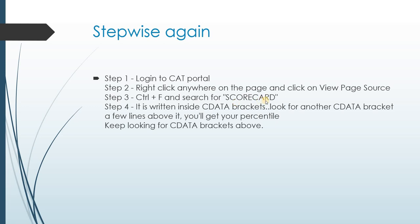Step four: the score information is written inside CDATA brackets. Your sectional percentiles will be there. Look for another CDATA bracket a few lines above and you'll get your overall percentile. I'm going to show you real examples gathered from various students — keep looking for CDATA brackets above.